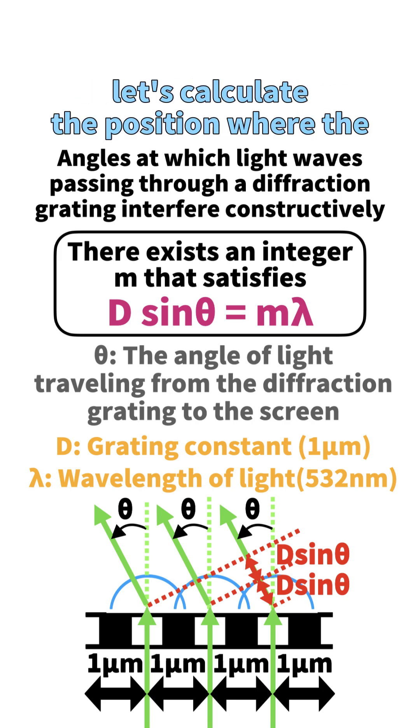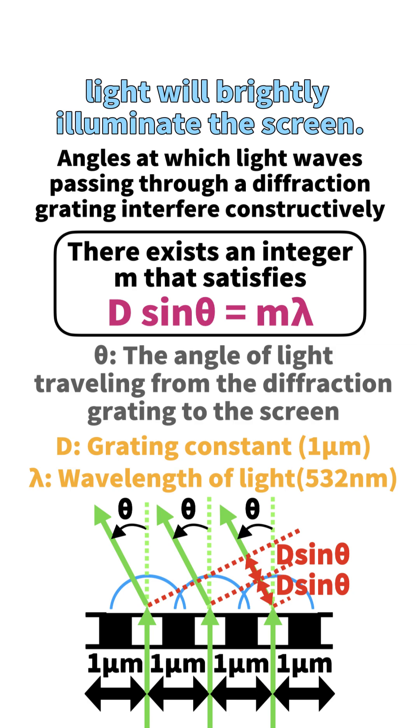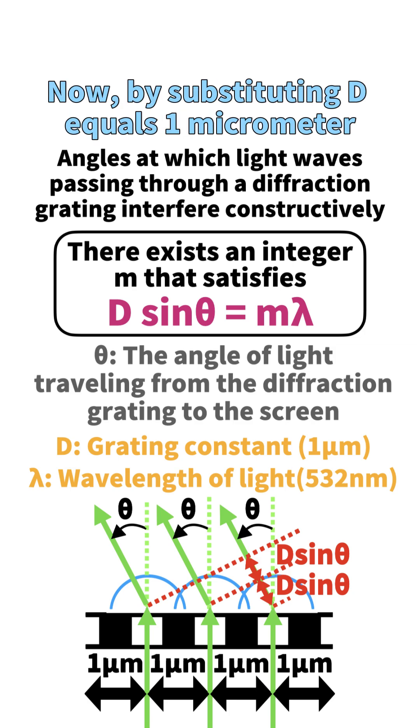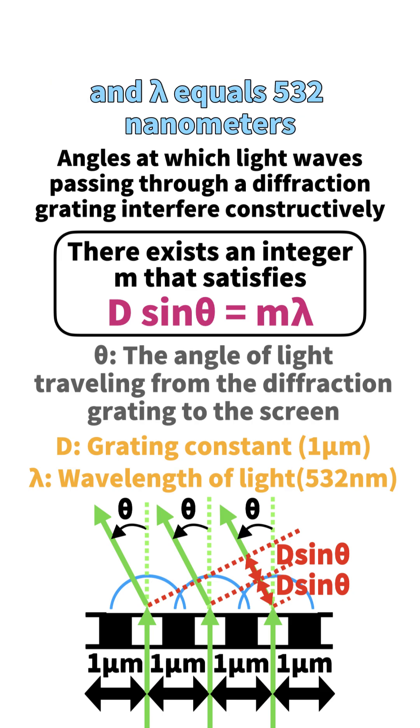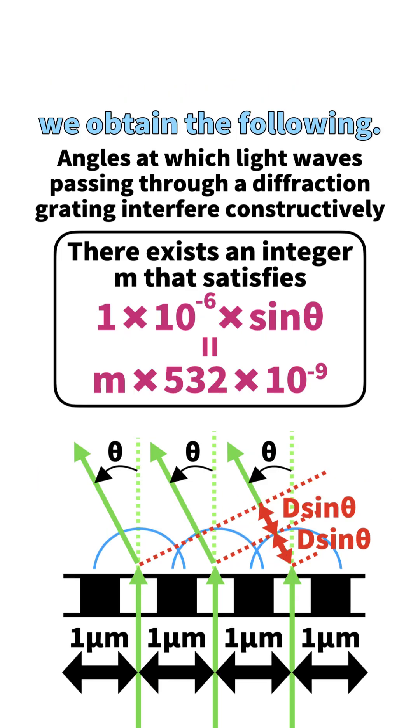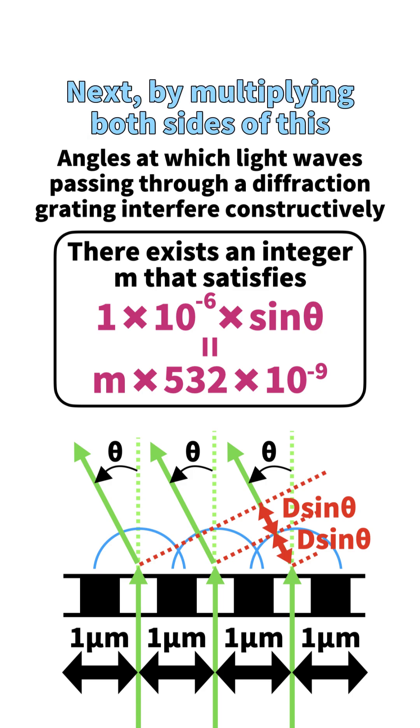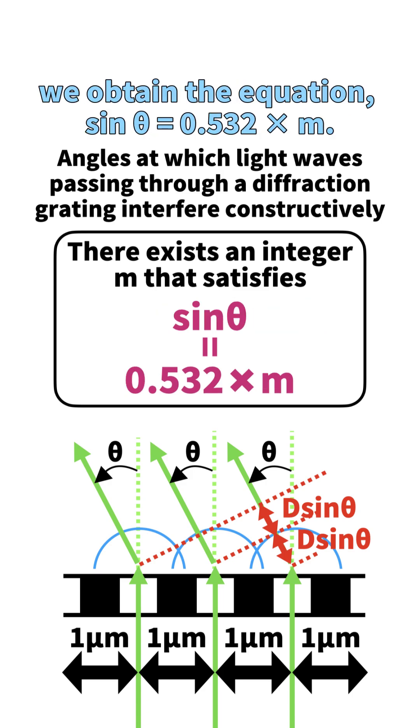Using this equation for θ, let's calculate the position where the light will brightly illuminate the screen. By substituting d = 1 micrometer and λ = 532 nanometers into the equation, we obtain the following. Next, by multiplying both sides by 10^6, we obtain the equation sinθ = 0.532m.